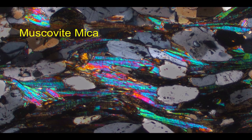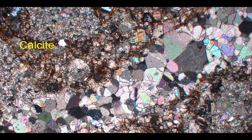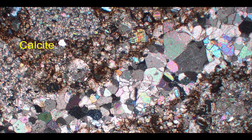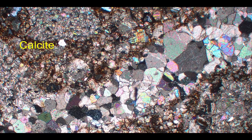Those are the main rock forming silicate minerals. There are some others though I think it's useful to look at, such as calcite. This is a limestone from South Wales and we can see the calcite crystals here, which have quite distinctive pale pastel colours that we can recognise. Often the cleavage can be seen — the very distinctive rhombohedral cleavage that's so characteristic of calcite.